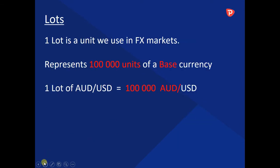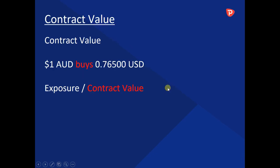So what does lot actually stand for? 1 lot is a unit that we use in FX markets and it represents 100,000 units of a base currency. So 1 lot of Aussie against the US dollar is actually 100,000 Australian dollars traded in the market. What would be the contract value then? Well, if 1 AUD buys 0.765, then 0.765 is your contract value.